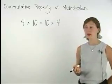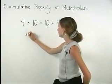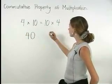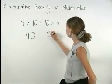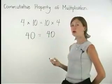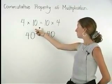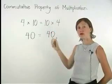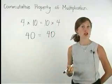So for example here, 4 times 10 equals 40, and 10 times 4 also equals 40. Since 40 equals 40, we can easily see that 4 times 10 must be equal to 10 times 4.